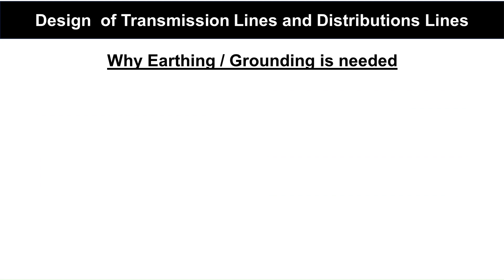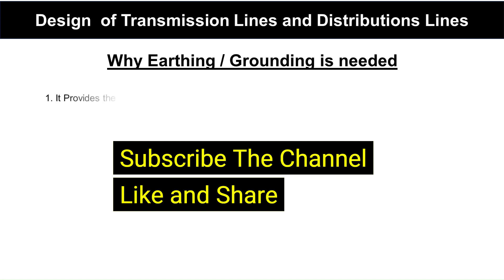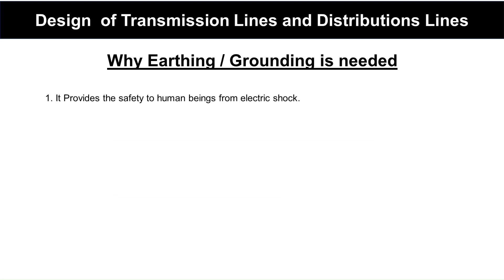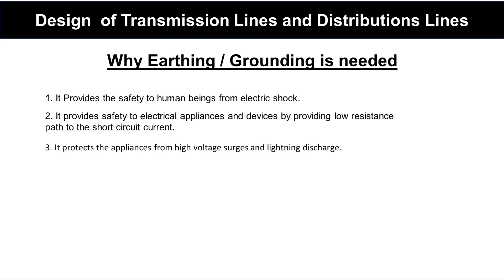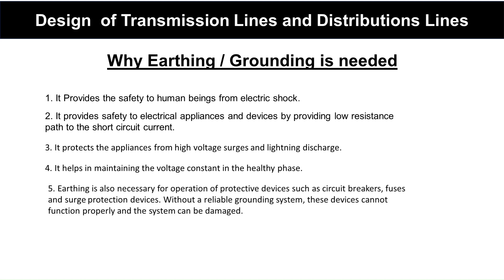Why is earthing or grounding needed? First, it provides safety to human beings from electrical shock. Second, it provides safety to electrical appliances and devices by providing a low resistance path to short-circuit current. Third, it protects appliances from high-voltage surges and lightning discharges. It also helps in maintaining the voltage constant in healthy phases, and is necessary for the operation of protective devices such as circuit breakers, fuses, and surge protection devices — without a proper grounding system, these devices cannot function properly and the system can be damaged.